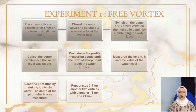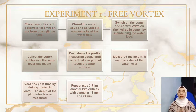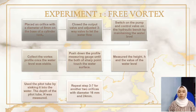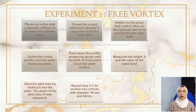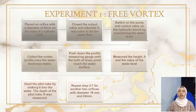For Experiment 1, the free vortex: Step 1, place an orifice with a diameter of 8mm on the base of the cylinder tank. Step 2, close the output valve and adjust the 3-way valve to let the water flow. Step 3, switch on the pump and control valve on the hydraulic bench, and maintain the water level by adjusting the control valve. Step 4, collect the vortex profile once the water level is stable. Step 5, push down the profile measuring gauge until both sharp points touch the water surface. Step 6, measure the height and the value of the water level. Step 7, in order to measure the velocity, use the pitot tube by sinking it into the water and measure the tip of the pitot tube in the water.